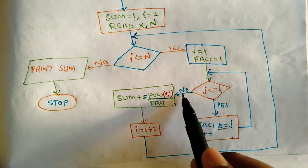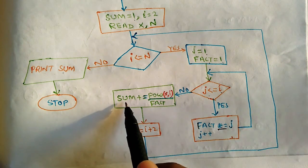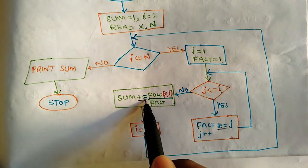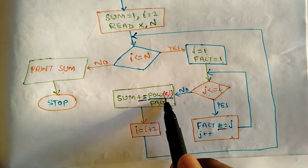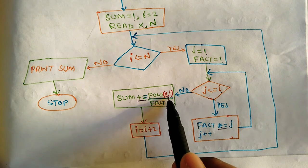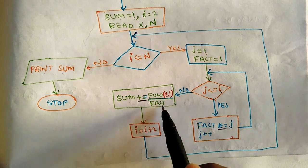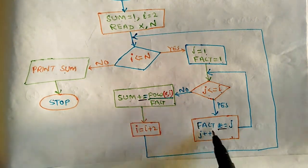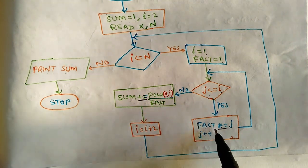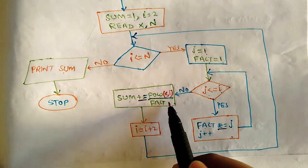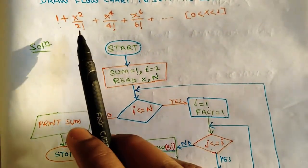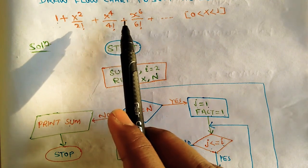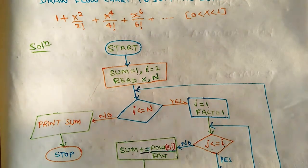If the factorial condition is false, we calculate the sum. Using shorthand assignment: sum = sum + pow(x, i) / fact. This means x to the power i divided by the factorial we just calculated. The stage terms are x², x⁴ and so on — that is the reason we use pow(x, i), which is a standard mathematical function.